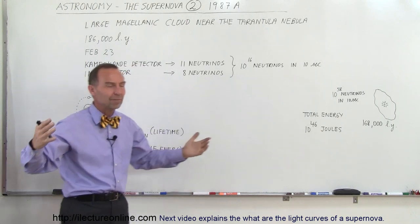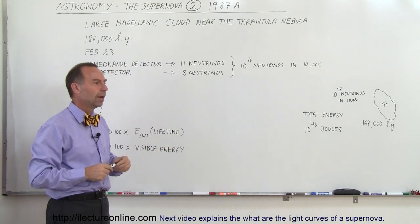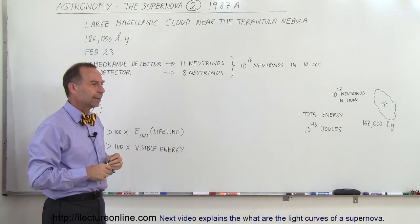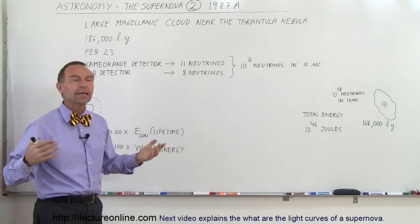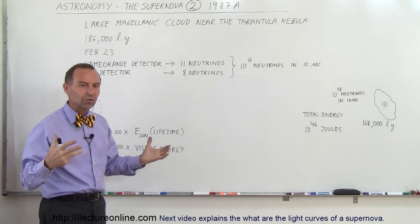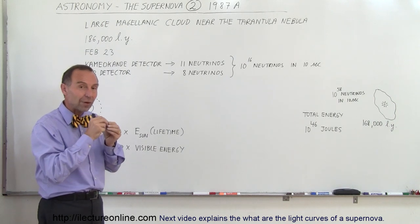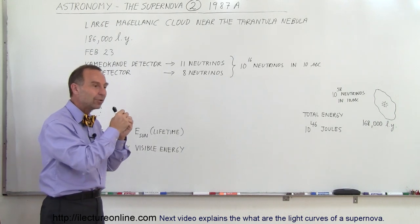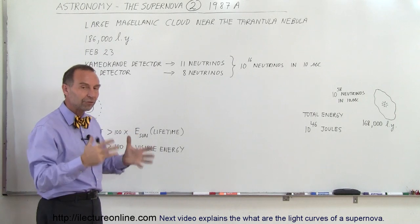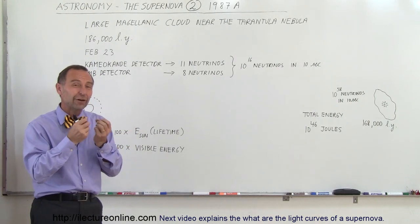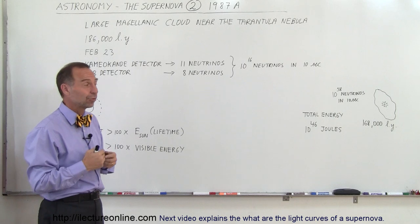Those detectors are about the size of maybe a medium-sized building, and they're filled with a special fluid and chemicals so that they will detect specific interactions between the neutrinos and the radioactive elements within the fluid in those detectors. That enables us to see a very small percentage of the neutrinos coming through.